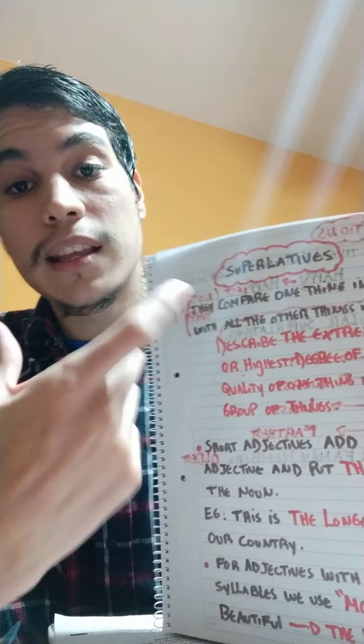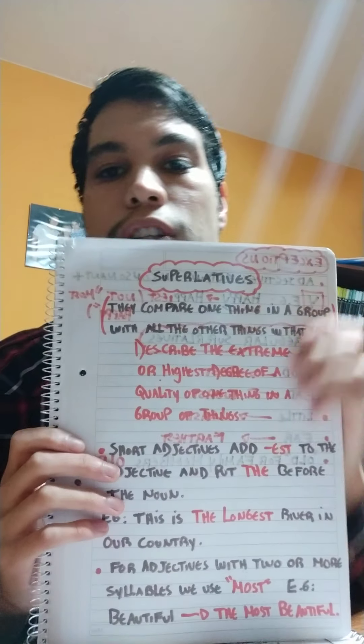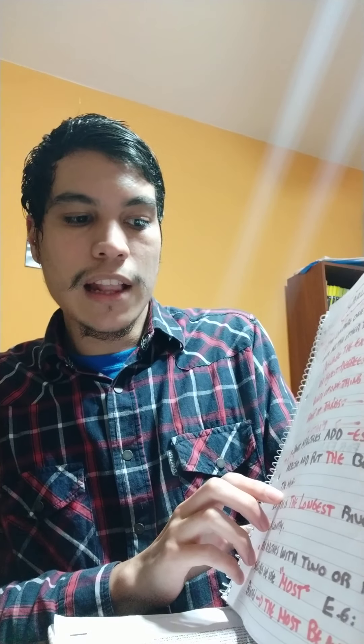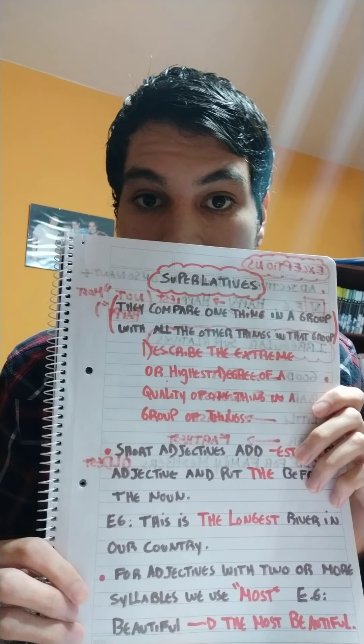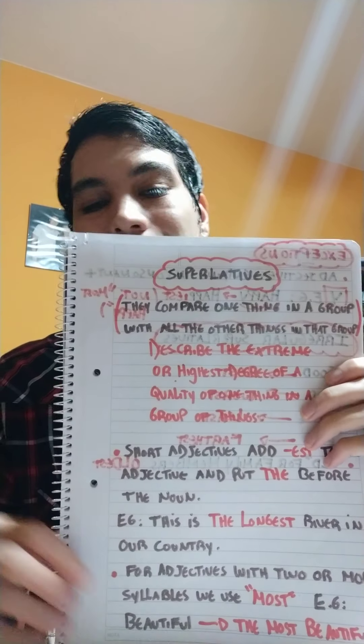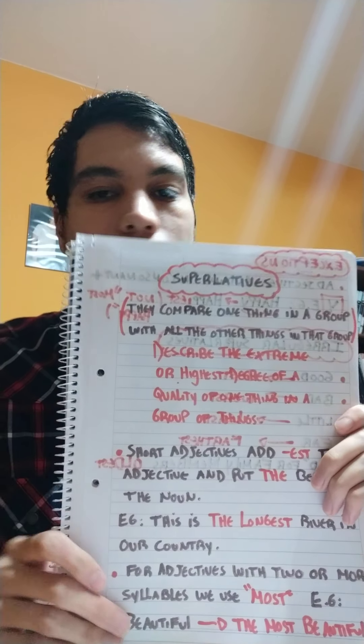Short adjectives: add EST to the adjective and put 'the' before the noun. Los adjetivos cortos agregan EST al adjetivo y ponemos 'the' antes del sustantivo. For example: this is the longest river in our country — este es el río más largo que hay en nuestro país.